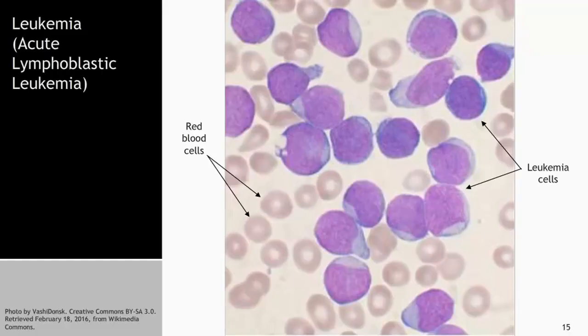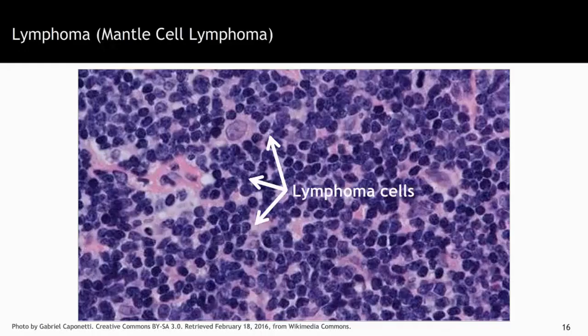Here is leukemia, which starts in the bone marrow and circulates into the blood. This is an example of acute lymphoblastic leukemia. The red blood cells that carry oxygen are the small donuts in the background, carrying iron and oxygen to oxygenate your blood. The leukemia cells are a proliferation of what we call blasts — overgrowth of cells with big nuclei and big cytoplasm. It is an uncontrolled growth of a certain type of cell that then takes over the blood and body.